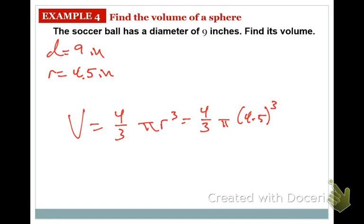So, 4.5³ times π. And then we'll go times 4 divided by 3. And then we'll get 381.7 cubic inches. And there you go.